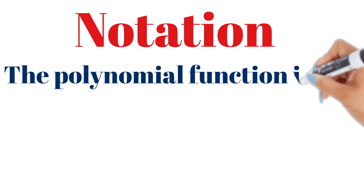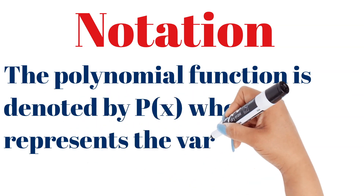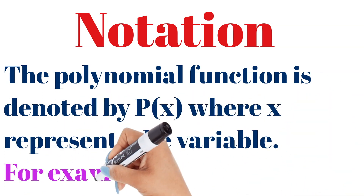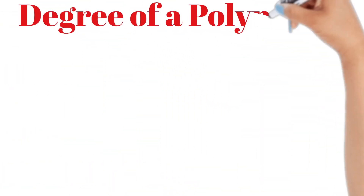Notation: the polynomial function is denoted by p(x), where x represents the variable. For example, p(x) = x² − 5x + 11. This is our notation — the way we denote and write a polynomial equation.